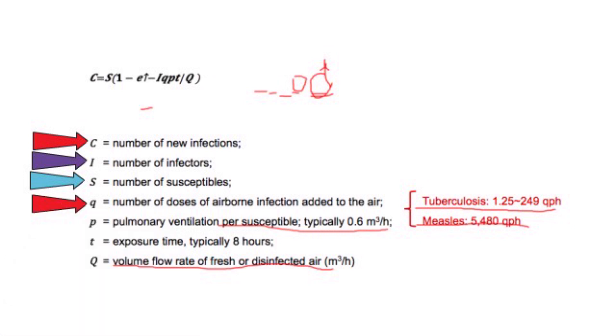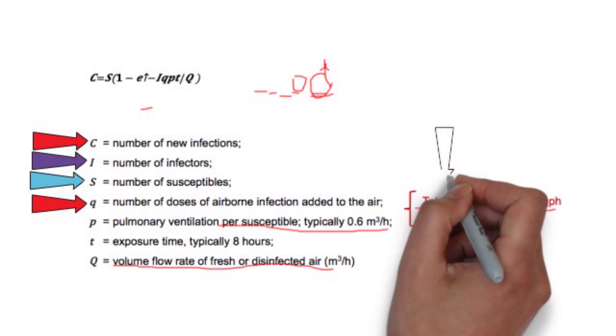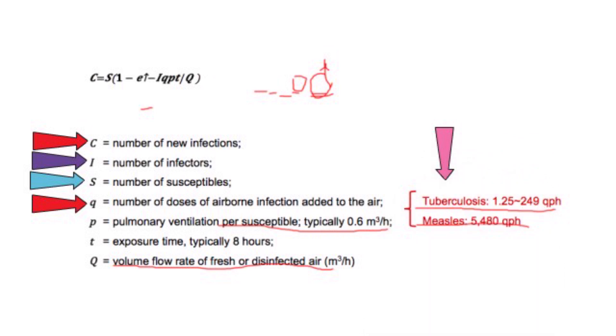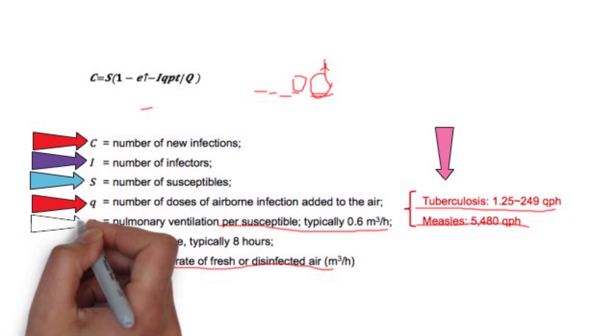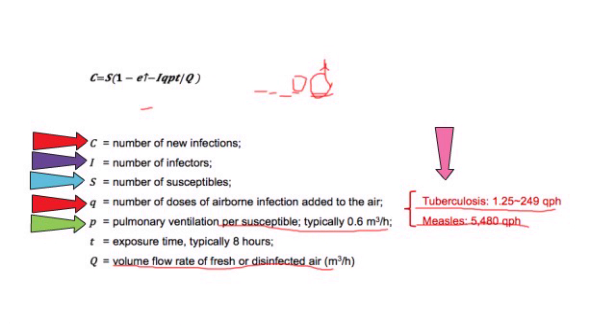The Q value depends on the type of infectious disease. The more infectious the disease is, the higher the Q value. For example, for tuberculosis, Q ranges from 1.25 to 249 quanta per hour. But for measles, this value could be as high as 5,480. P is pulmonary ventilation per susceptible and is mostly a fixed value. T is exposure time, meaning how long you have been around the infected patient.